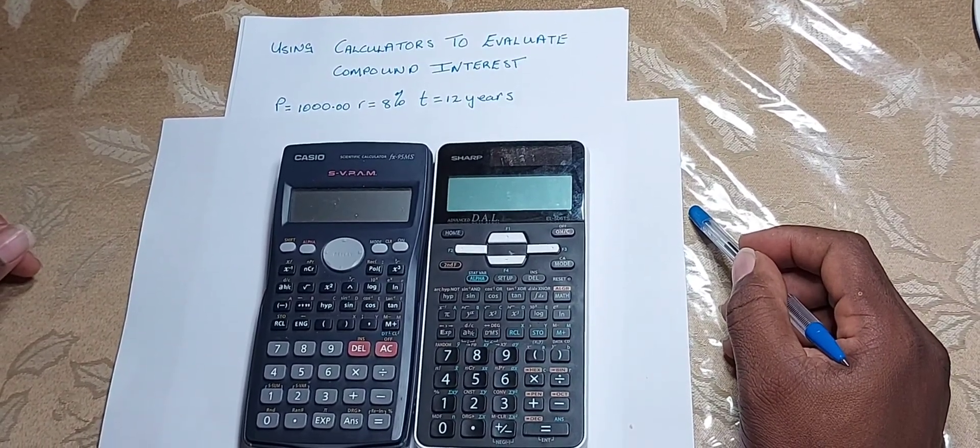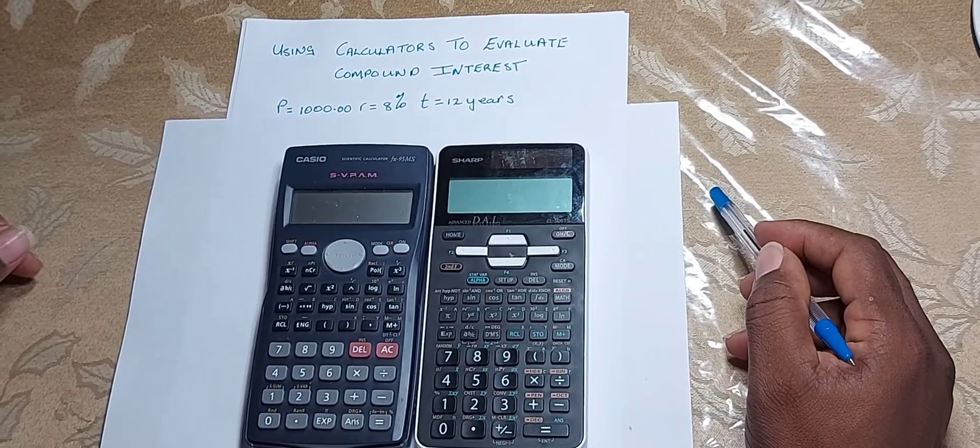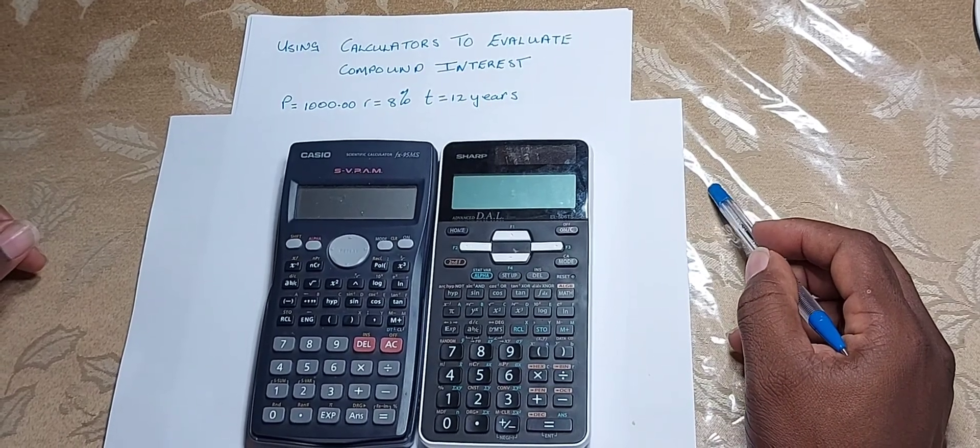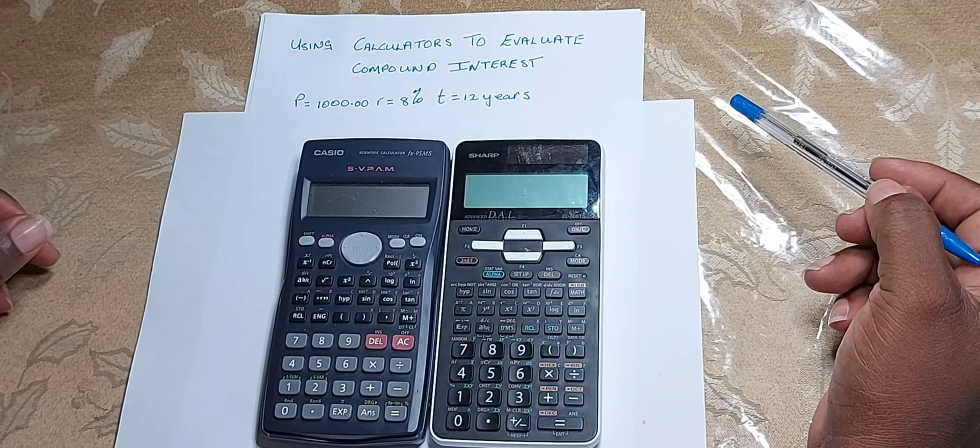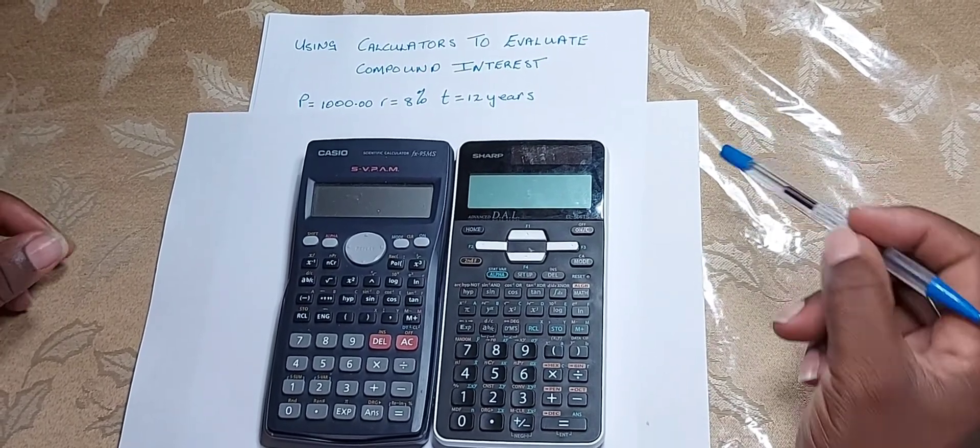Today we are going to look at using calculators to evaluate compound interest. Suppose you were given a principle of 1000, a rate of 8%, and the time being 12 years.